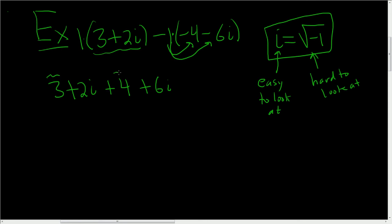Now you just combine the real numbers. So 3 plus 4 is 7. And 2i plus 6i is just 8i. And that's it. That's how you subtract complex numbers. Adding is the same, but it's even easier.